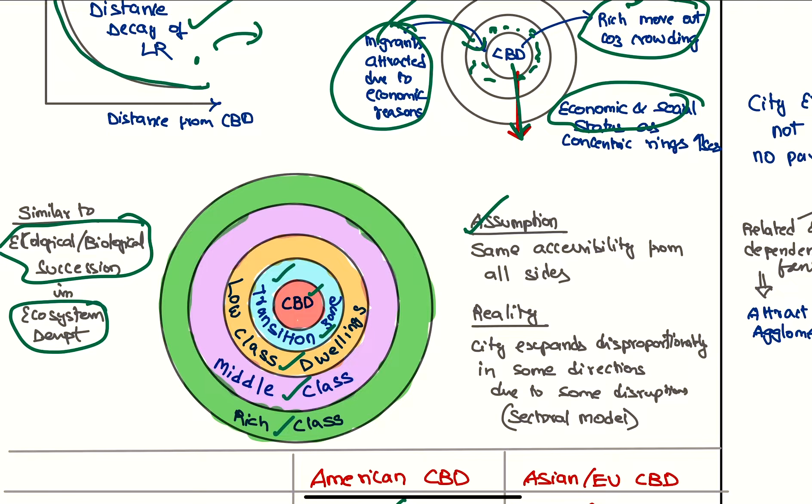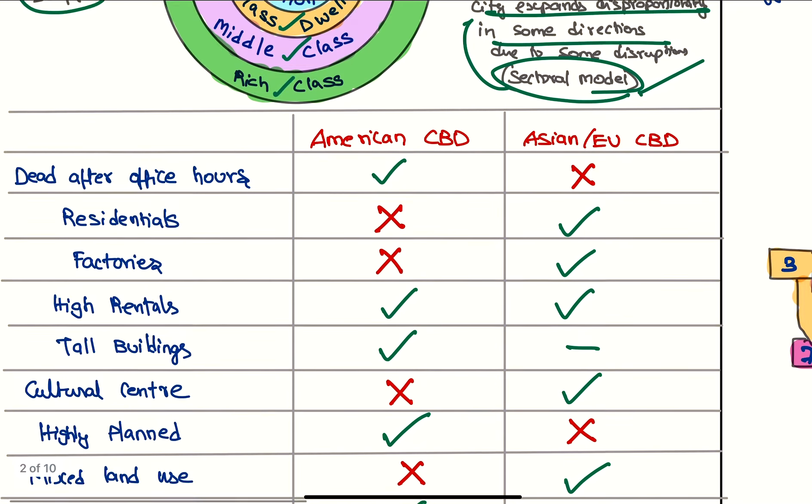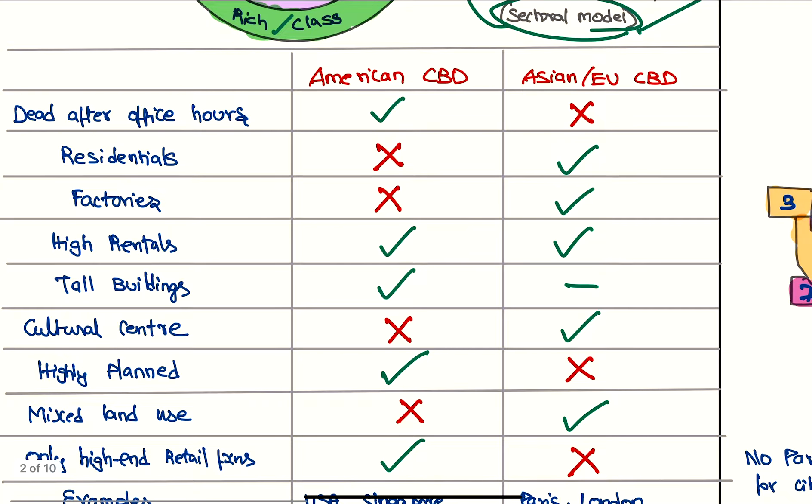Also, the assumption here is that same accessibility from all sides, but it won't be the same which will be corrected by the sectoral model, which is the next model we are going to see. In reality, the city expands disproportionately in some directions which will be controlled by the sectoral model. Comparing the CBDs, we have two types: American CBD and Asian or European CBD.